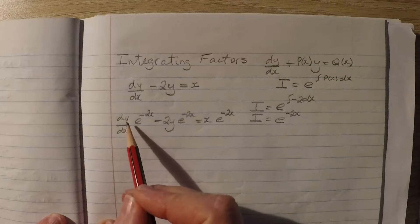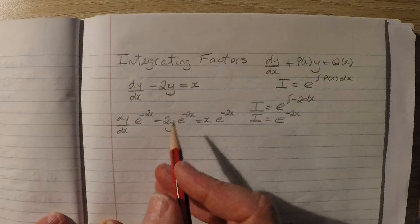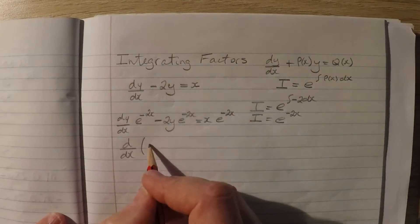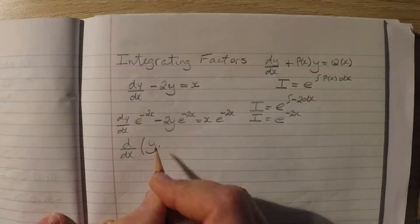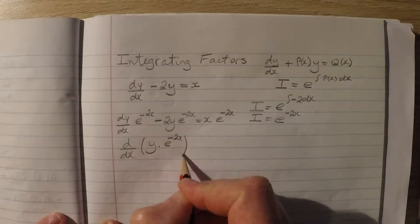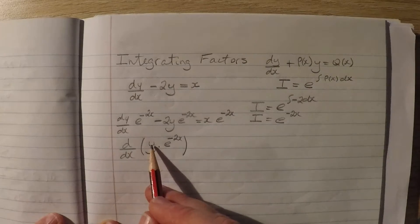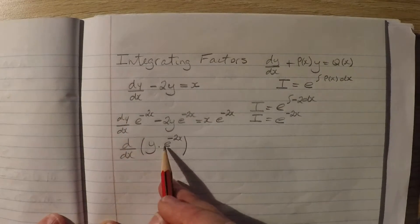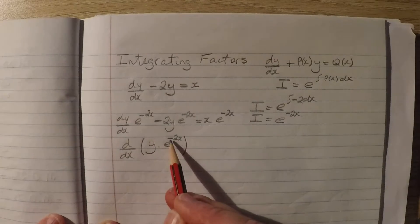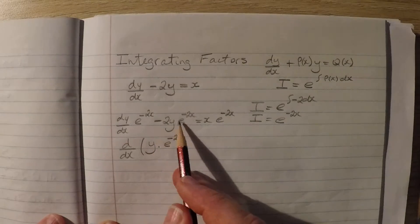The advantage of this is that what we're looking at here is actually a product rule type of a derivative. We can work this backwards and express this as the derivative of y multiplied by the integrating factor. If you think about that for a minute, the derivative of a product is the derivative of this term, dy dx multiplied by the second term. And then we add on the derivative of this term, which would be negative 2 times e to the negative 2x multiplied by y, which is what we have there.